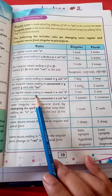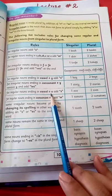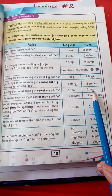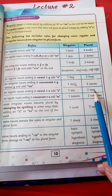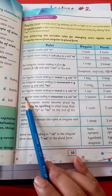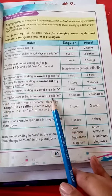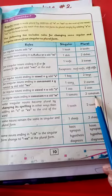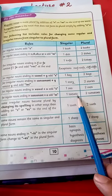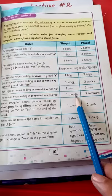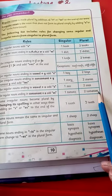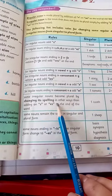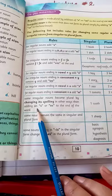For regular nouns ending in a vowel plus o, add -s. For example, zoo — both letters are vowels — becomes zoos. For regular nouns ending in a consonant plus o, add -es. For example, tomato ends in consonant t plus vowel o, so it becomes tomatoes.